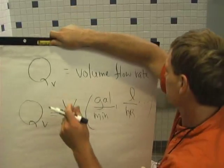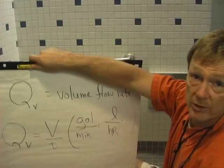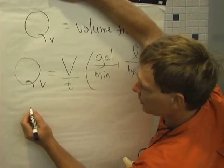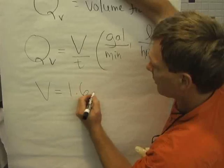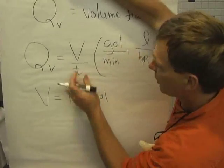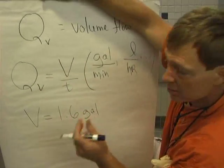Now, we know that this is 1.6 gallons per flush. So for each flush, we've got a volume of 1.6 gallons. So we know the volume. We just don't know the time. So let's measure that.